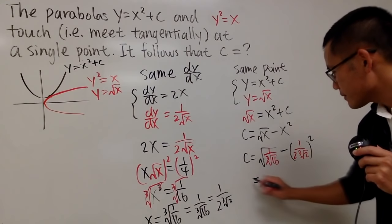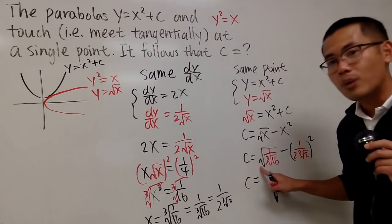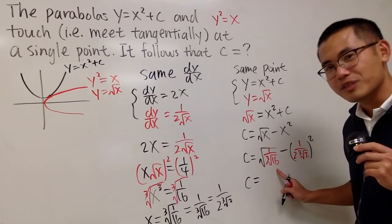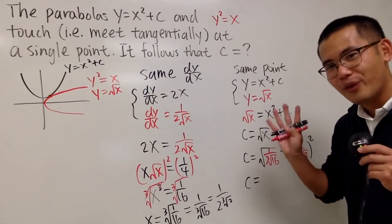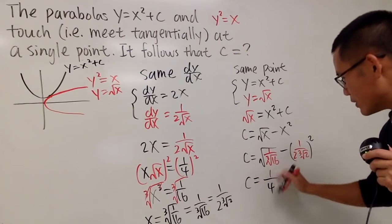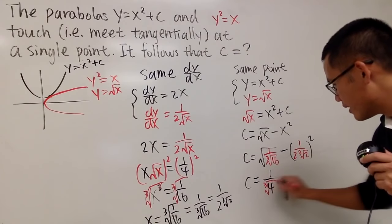This right here, c equals. When we do the square root and then the cube root, I can actually do the square root first. So, square root of 16 is equal to 4. So, this is 1 over 4, but we still have the cube root right here.